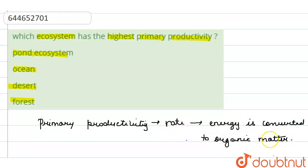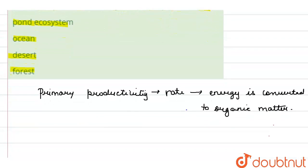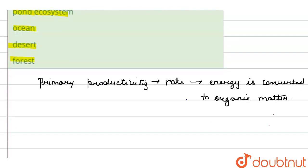So by definition we know that primary productivity is the rate at which energy is converted into organic matter. If we talk about the options given over here, the forest is one of the options that converts highest amount of organic matter every year. As in forest, we know that there are numerous amount of trees, and trees are large.